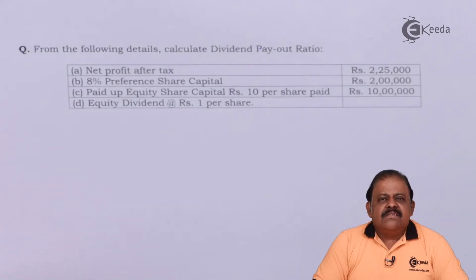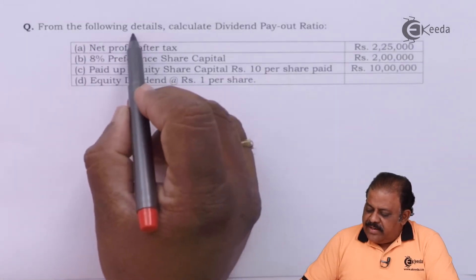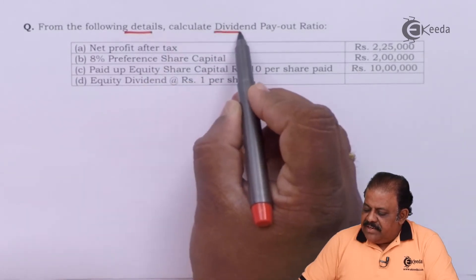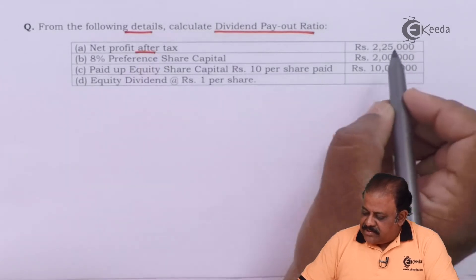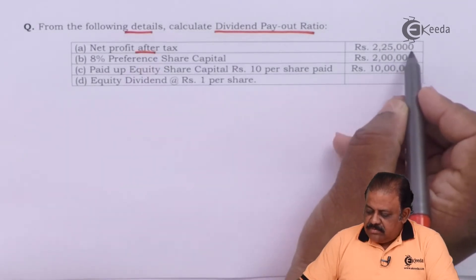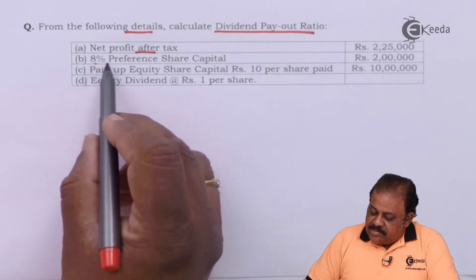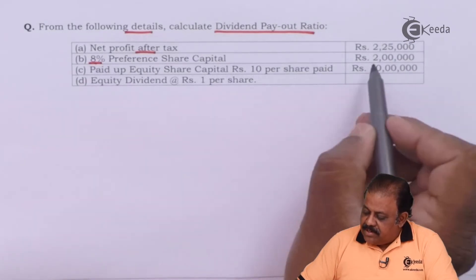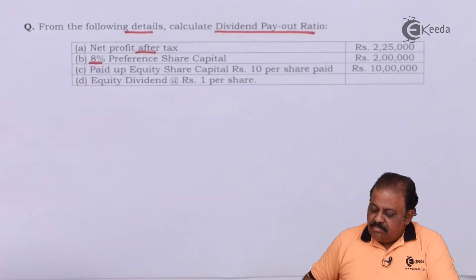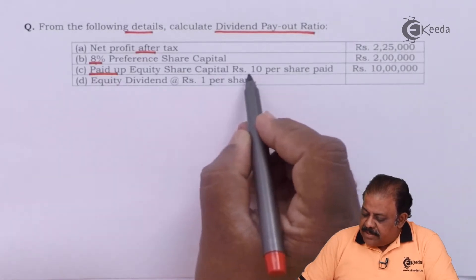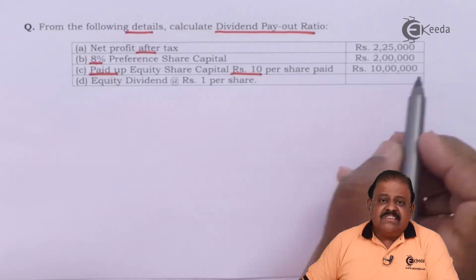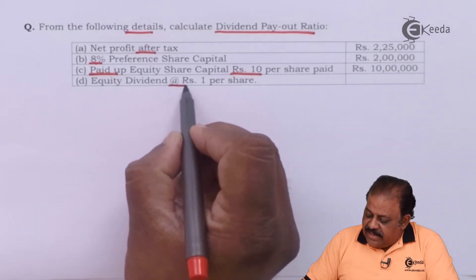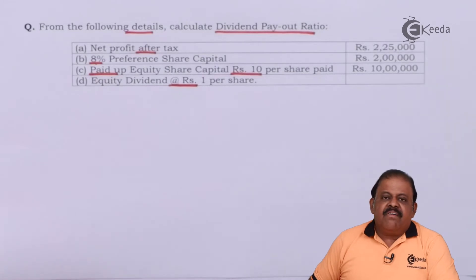Let us discuss this concept with one small problem. From the following details, calculate the dividend payout ratio. Net profit after tax: Rs. 2 lakh 25,000. 8% preference share capital: Rs. 2 lakhs. Paid-up equity share capital: Rs. 10 per share, total paid-up amount Rs. 10 lakhs. Equity dividend at the rate of Rs. 1 per share.